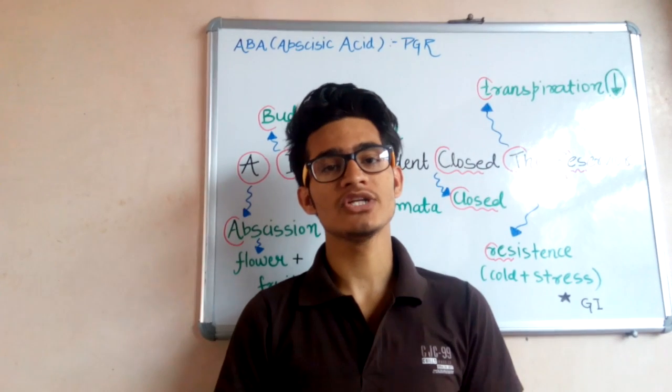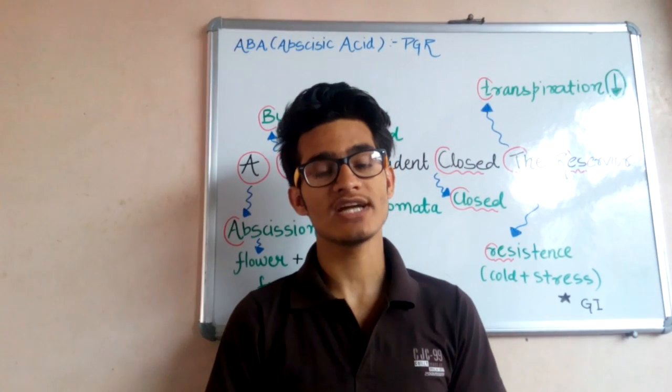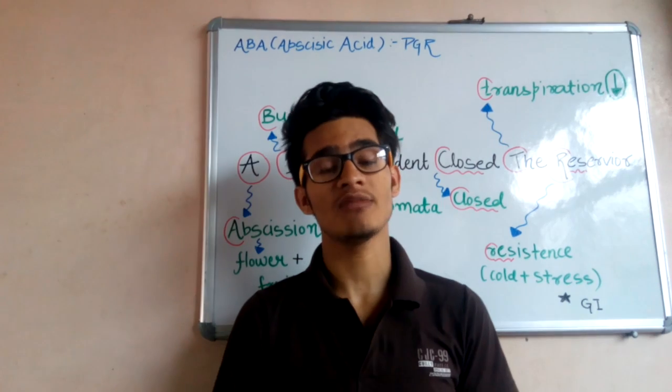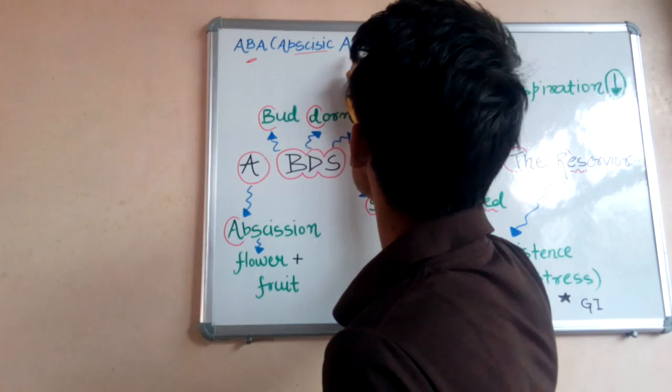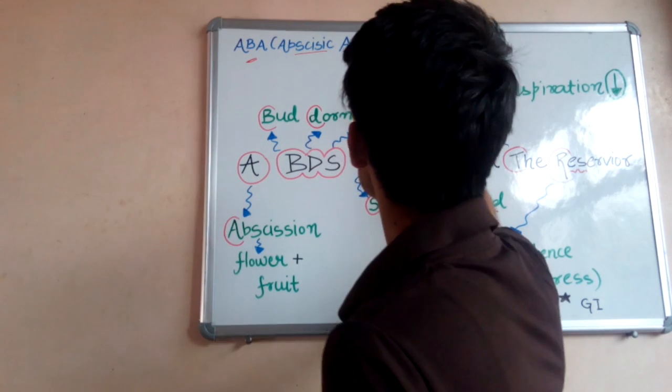Hello guys and welcome back to another video tutorial from my YouTube channel, Biology at Your Fingertips. Today we are learning about the functions of ABA, that is abscisic acid, which is a kind of PGR, that is plant growth regulators.